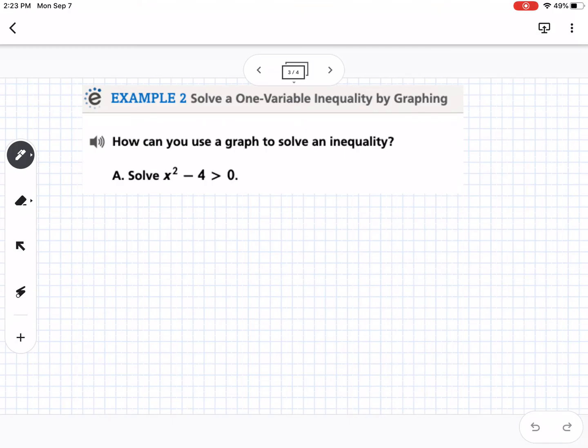So, our next example is how can you use a graph to solve an inequality? We have x squared minus 4 is greater than 0. So, what we can do is we can graph this part right here. We can graph y equals x squared minus 4. So, if we do, I'm going to sketch this. This has intercepts at 2 and negative 2, and our y-intercept at negative 4, and it's a parabola.